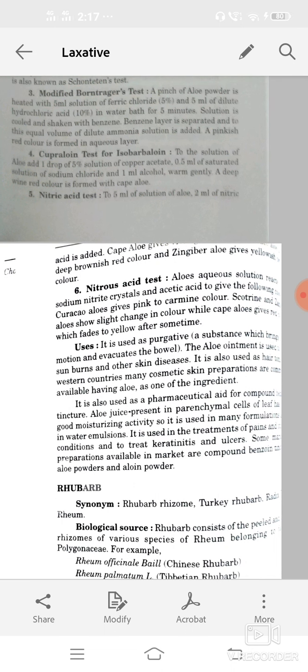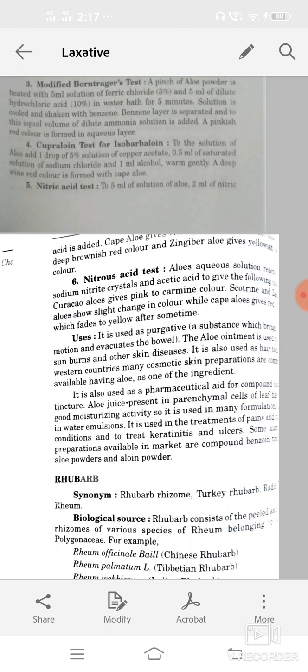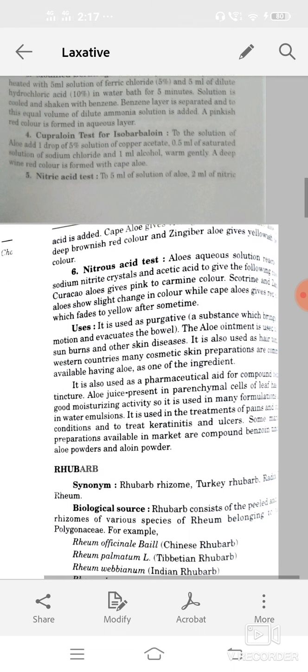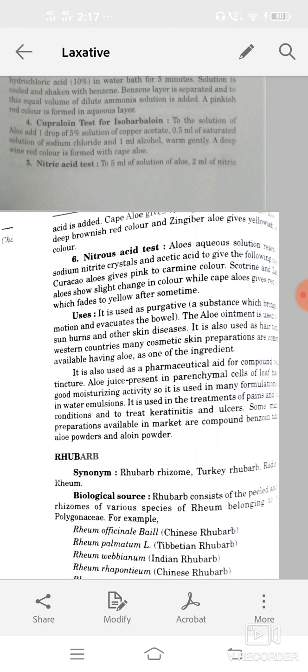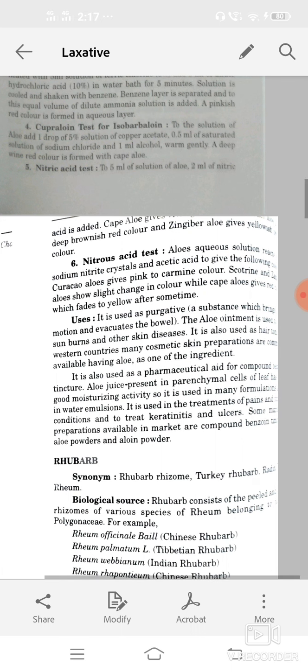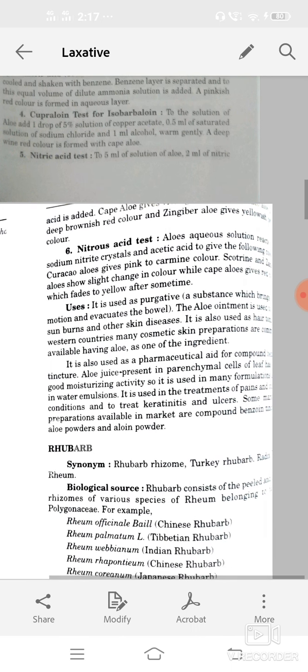In Western countries, most cosmetic preparations are commonly available having aloe as a main ingredient, also used in pharmaceuticals for compound benzoin tinctures. Aloe is present in parenchymatous cells of leaves that has good moisturizing properties, so used in formulations like oil and water type of emulsions. Also in treatment of pain, itching conditions, to treat keratitis or ulcers.